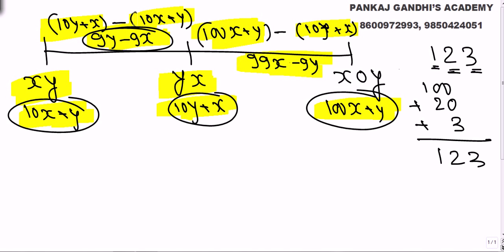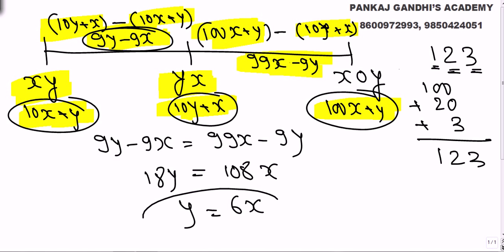So in one hour car went this, one hour it went this but it has to be equal as the car is going with a constant speed. So first hour's distance has to be equal to second hour's distance. We get 18y equal to 108x, y equal to 6x.